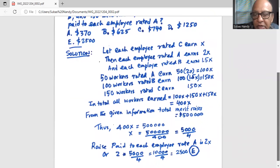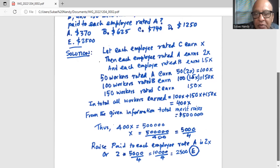Now, raise paid to each employee rated A is 2 times X. So it is 2 multiplied by 5,000 divided by 4, which is 10,000 divided by 4 or 2,500. So the correct answer is option E, 2,500.